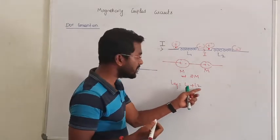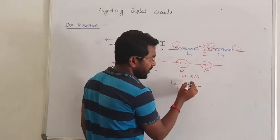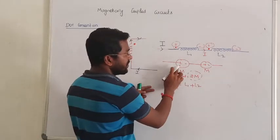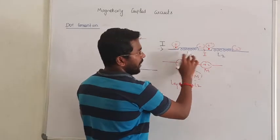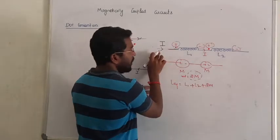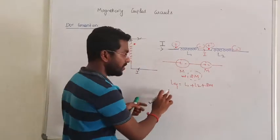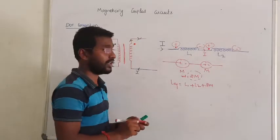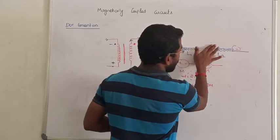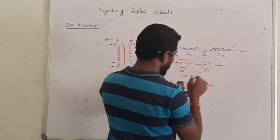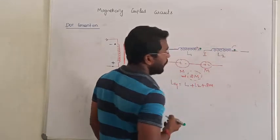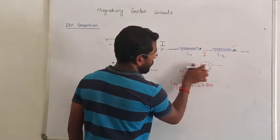The question is: what is the polarity of the mutual inductance? From observation, in the case where both are aiding, we give a plus sign — so it will be plus 2M. That is the mutual inductance contribution. Let us check the second case: remove the dot and fix the dot at the other end.